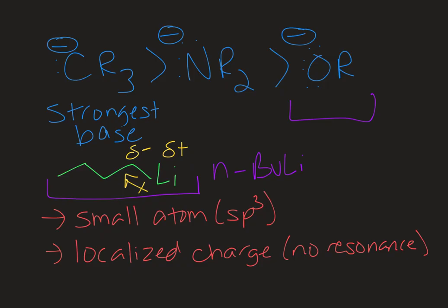These series of bases are small atoms. They're in that second row across, and they have a localized charge, no resonance structure, they're sp3 hybridized, and that charge resides just on those small atoms.